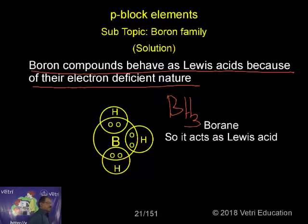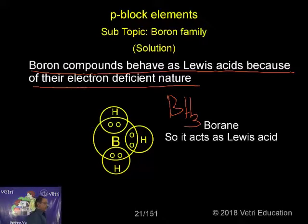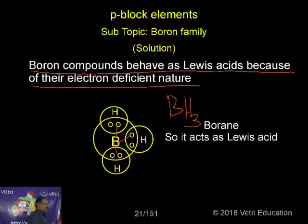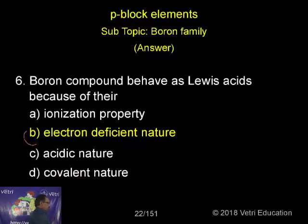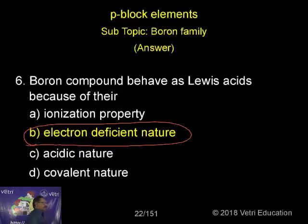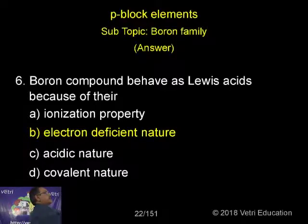If you take BH₃, it is not stable; it usually exists in the form of B₂H₆ as a dimer. Boron has only three electrons and three from hydrogen, so the center has only six electrons — it is deficient. By accepting electrons it can be stabilized, so it is a Lewis acid. The answer is: boron compounds behave as Lewis acid due to their electron-deficient nature.